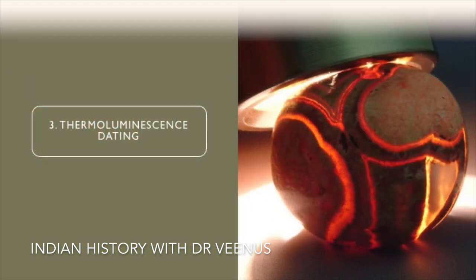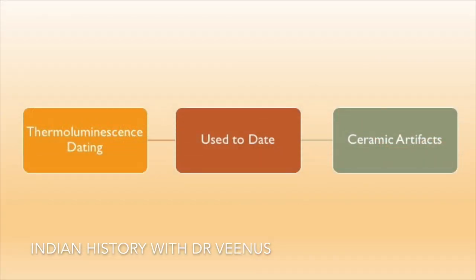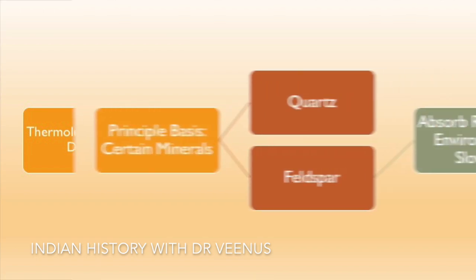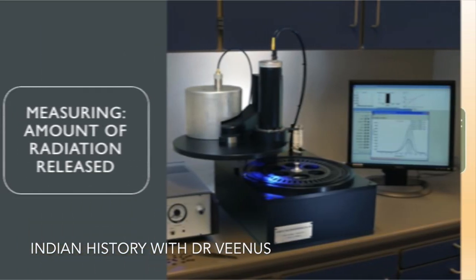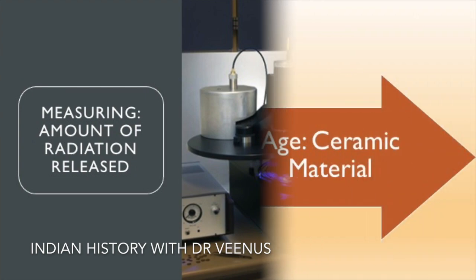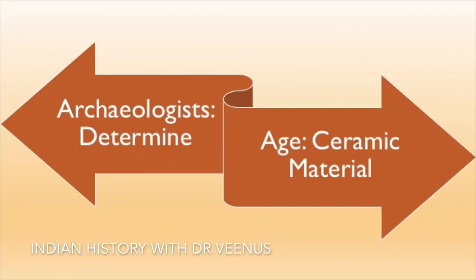Thermoluminescence dating is a method used to date ceramic artifacts. It is based on the principle that certain minerals, such as quartz and feldspar, absorb radiation from the environment and release it slowly over time. By measuring the amount of radiation released, archaeologists can determine the age of the ceramic material.